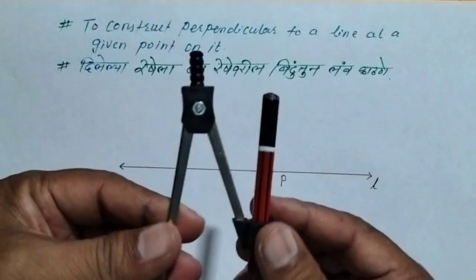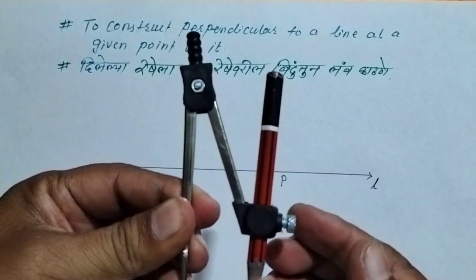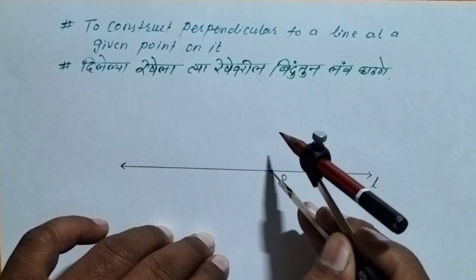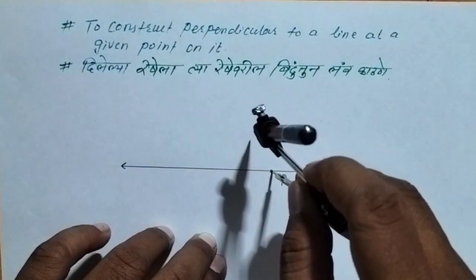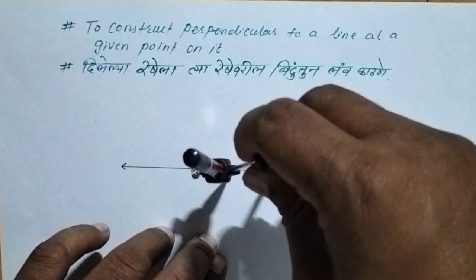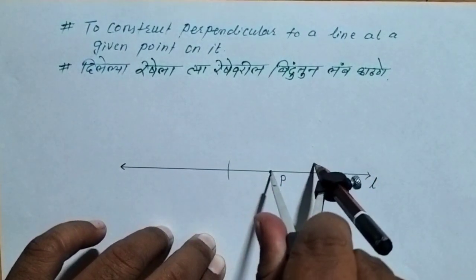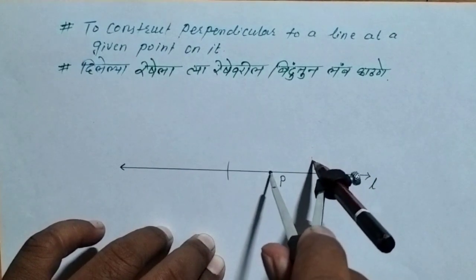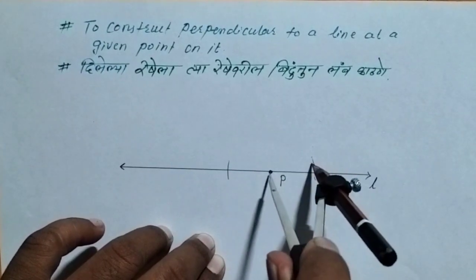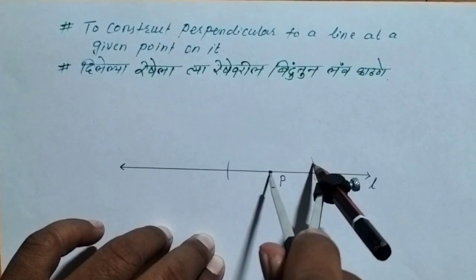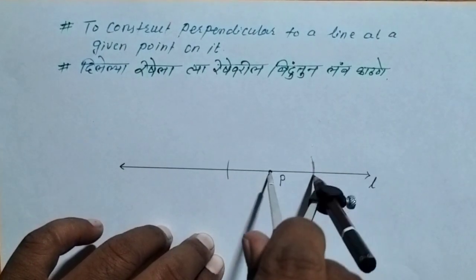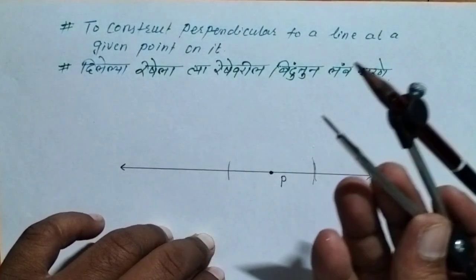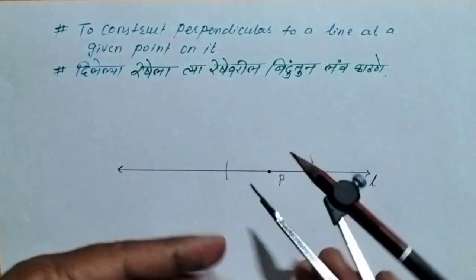Now we use the compass. Open the compass to a suitable distance. Place the iron point on point P and draw arcs on both the left and right sides of point P along the line.